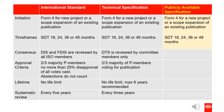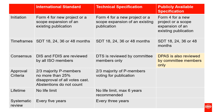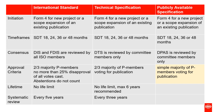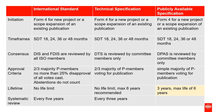Publicly available specifications, also called PASs, have the same initiation and timeframes available while having the lowest threshold for consensus. PAS deliverables are only balloted among committee members and just need a simple majority to be approved for publication. A PAS is valid for three years and can be extended to a six-year maximum shelf life. After the six-year limit has been reached, a committee can either withdraw the PAS or convert it into a technical specification or international standard. Publicly available specifications are also part of the automated systematic review process.